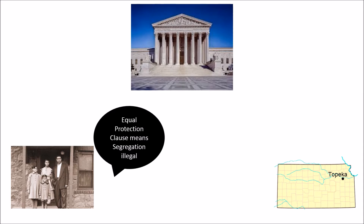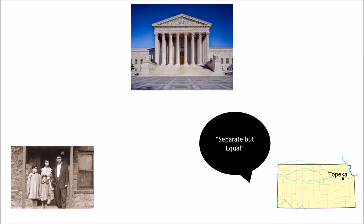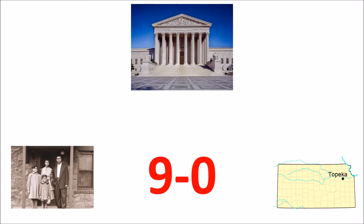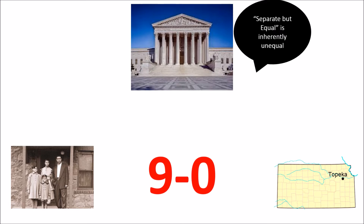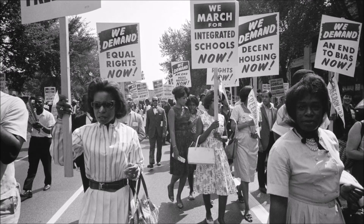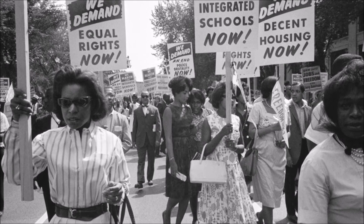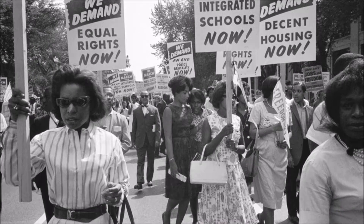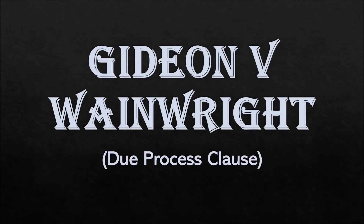The Brown family argued that the equal protection clause makes segregation illegal. Topeka argued with the precedent set by Plessy v. Ferguson that separate but equal is okay. The court ruled nine to zero with Brown, stating that separate is inherently unequal. This overturned the precedent set by Plessy v. Ferguson and was extremely important in ending segregation — a big win for the civil rights movement.